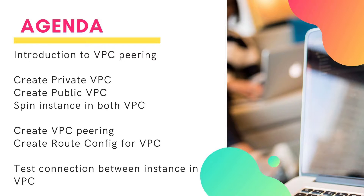Let us start with a simple topic that is VPC peering. When you have resources running in two different VPCs, and if you want the instances to talk to each other, you have to create VPC peering, and this brings the connection between the VPCs, and then you have the choice to define routes between the subnets in VPC. This demo is planned to give you an understanding on VPC peering, and also a recap of what we have learned in all the previous sessions.